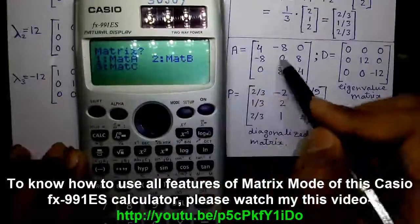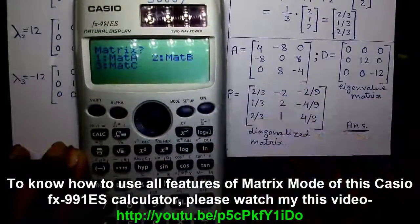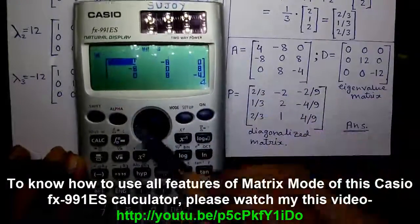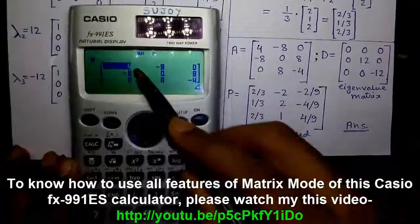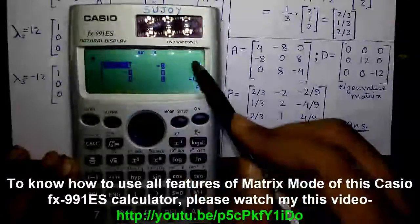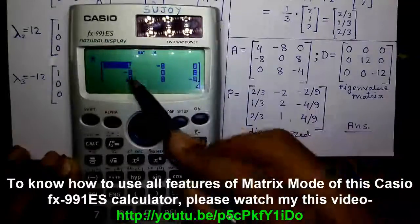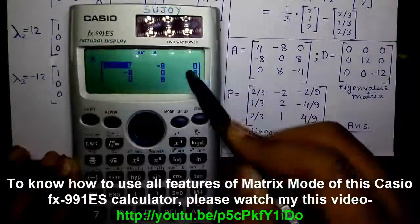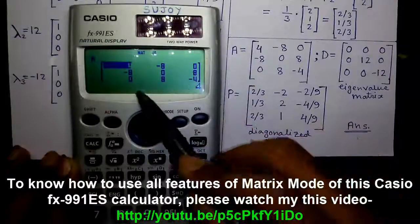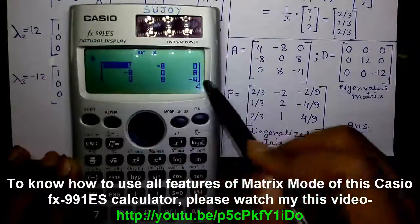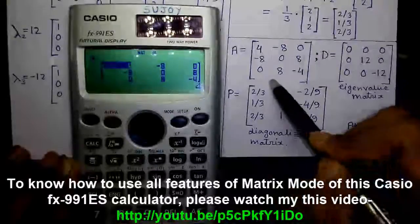Matrix A is this matrix. Let's verify: 4, minus 8, 0, minus 8, 0, 8 and 0, 8, minus 4.